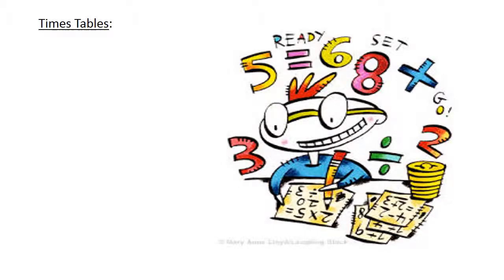Times tables. 7 times 9 equals 63. 12 times 12 equals 144.